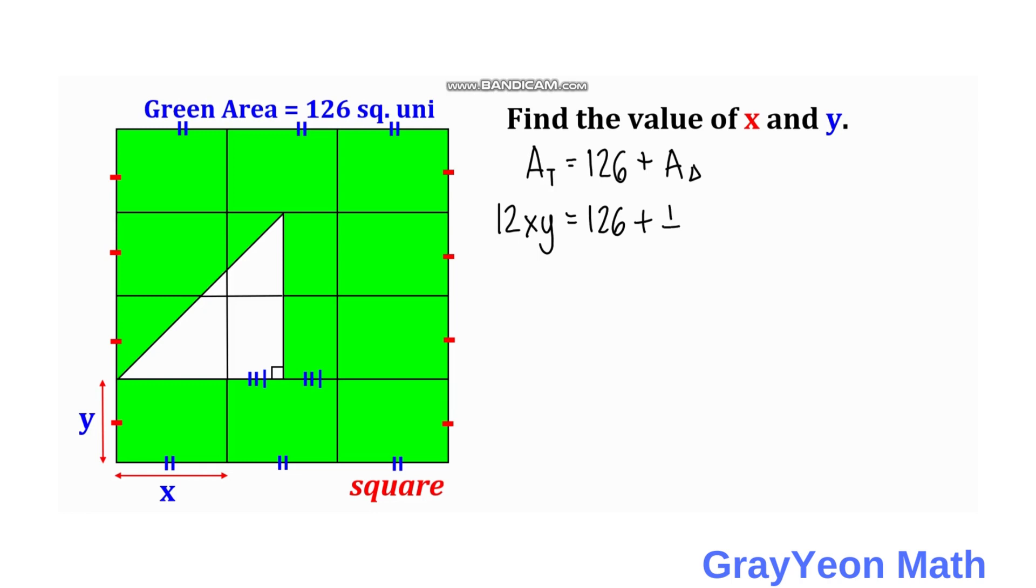The triangle area is one-half times the base times height. The base is 3x/2 and the height is 2y. So the base is 3/2 x times 2y for the height.